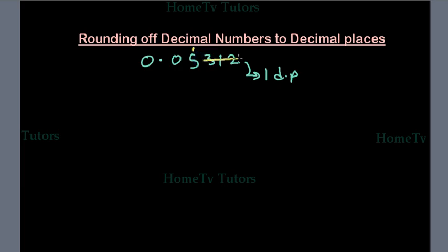Then we have to delete the remaining numerals. The first of the group of numerals to be deleted is less than 5, so it won't have effect on the significant numerals. So now we have 0.05 to 1 decimal place.